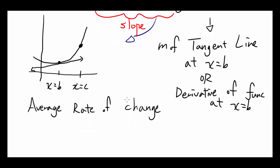Now, let's talk about average rate of change. Well, the average rate of change is, let's say this is average rate of change from x equals b to x equals c.